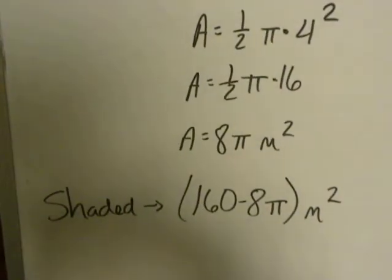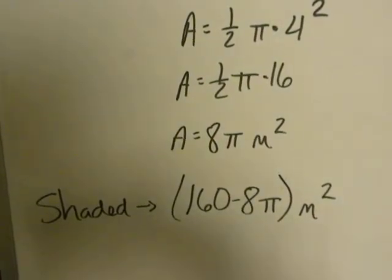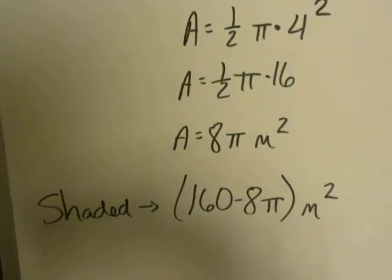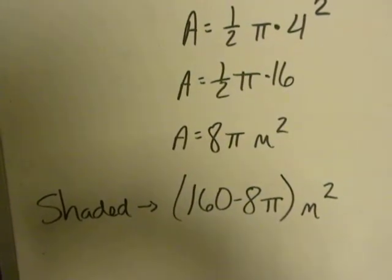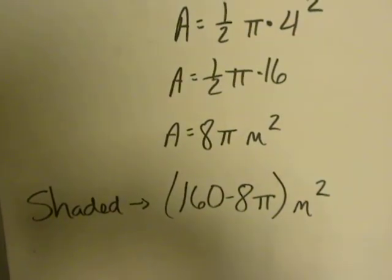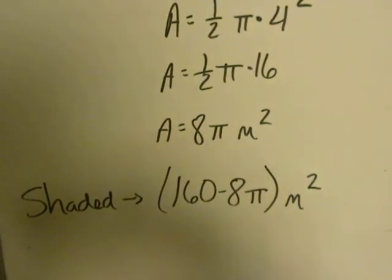So I just write those two things inside a set of parentheses, 160 minus 8π, with my label of meters squared outside. And now I have an exact answer for the area of the shaded region.